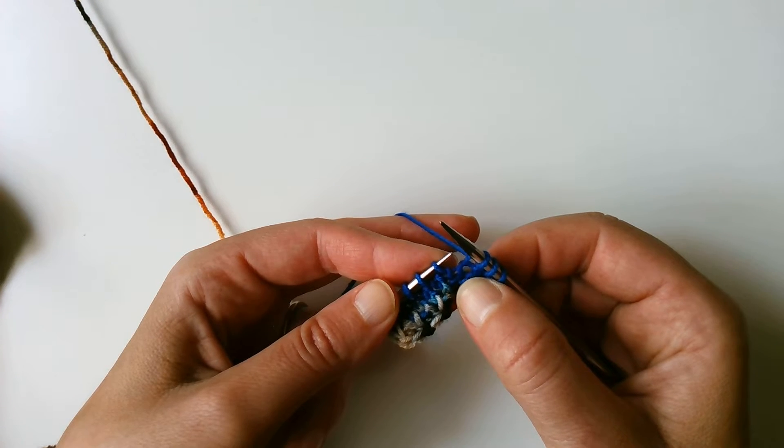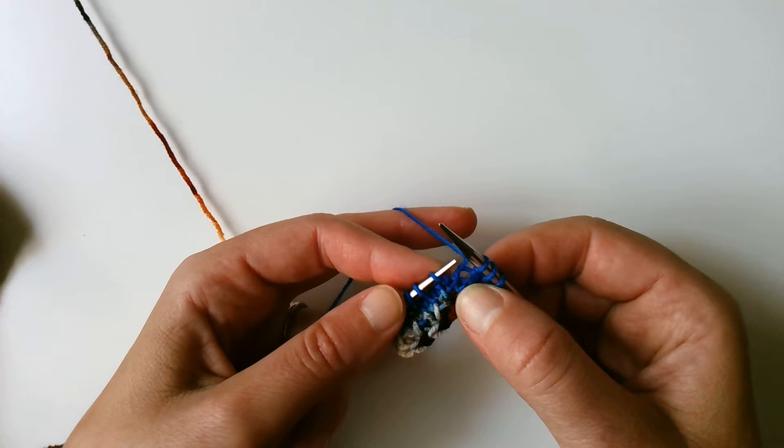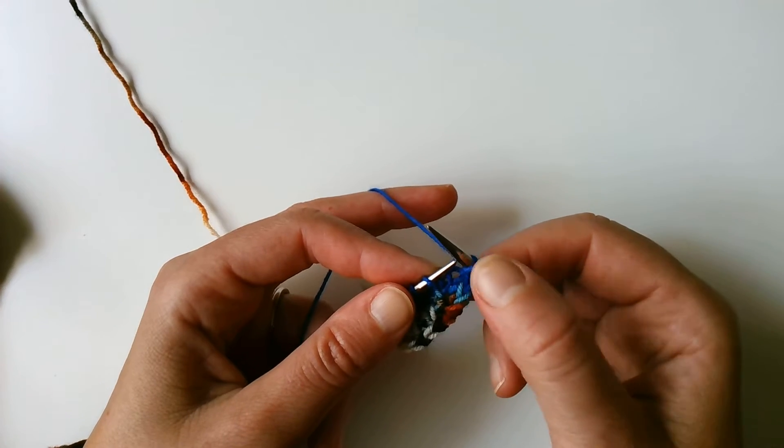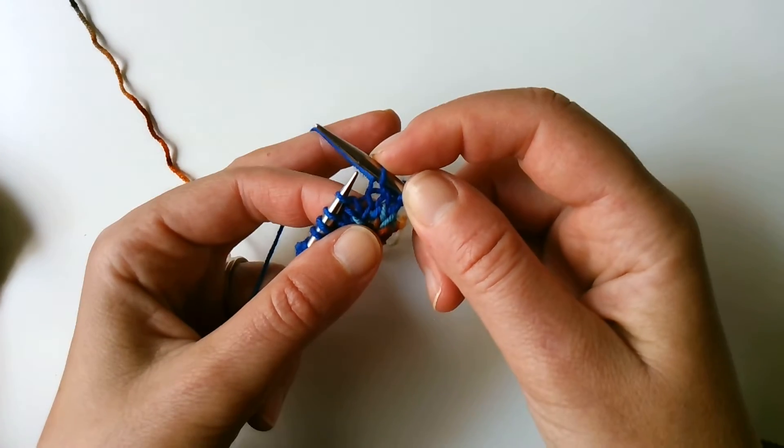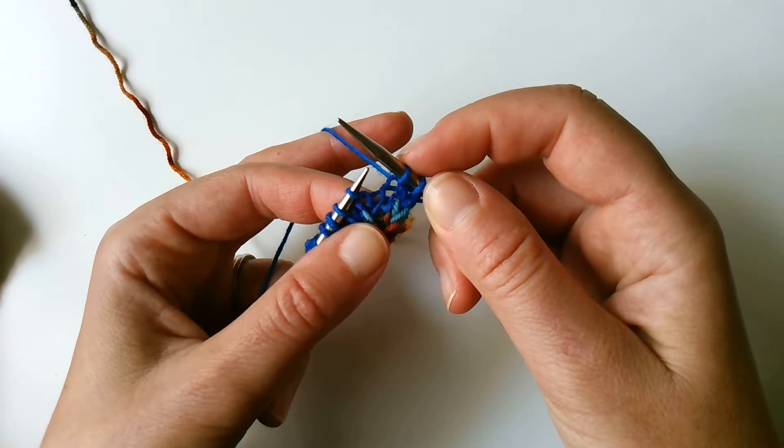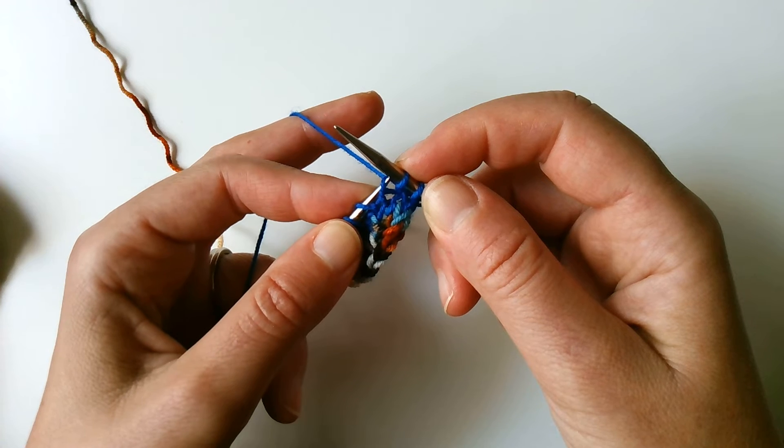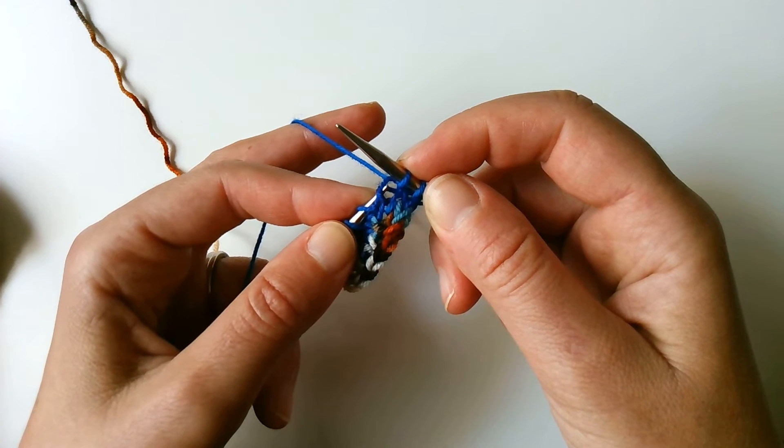the left leg of the stitch that's two stitches below the stitch on our right needle. So this is the stitch on our right needle. You can see this? The stitch on our right needle. Here's one stitch below, and here's two stitches below.